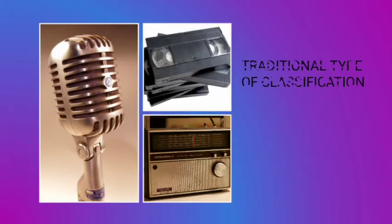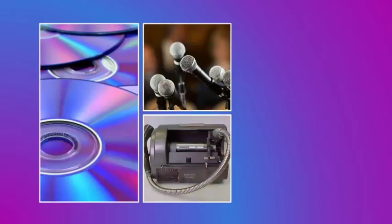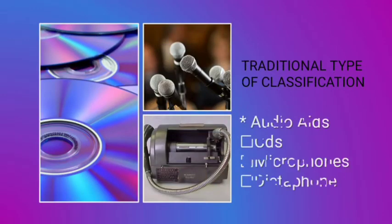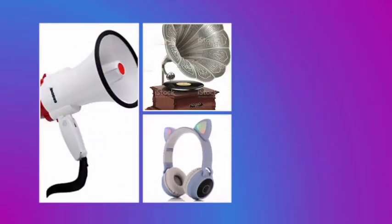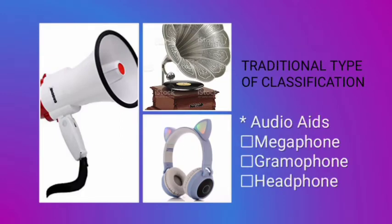Here we go — the traditional type of classification. First is audio aids, and these are the examples: mic, radio, tape recorder, CDs, microphones, Dictaphone, megaphone, gramophone, and headphone.